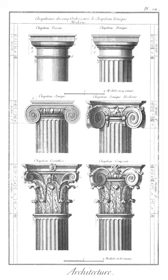Sash: the horizontal and vertical frame that encloses the glazing of a window. A sash may be fixed or operable and may be of several different types depending on operation: casement, single or double hung, awning, hopper, or sliding.